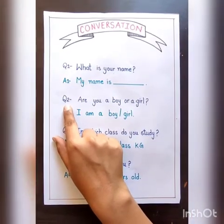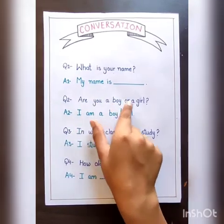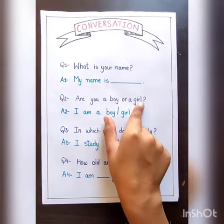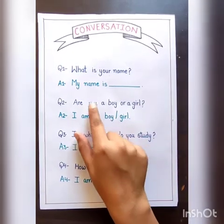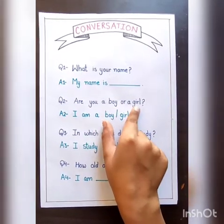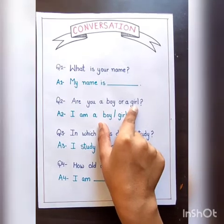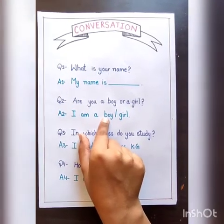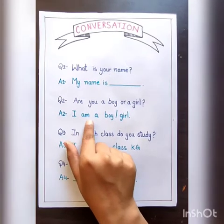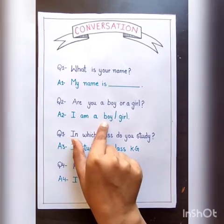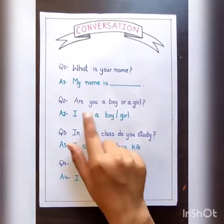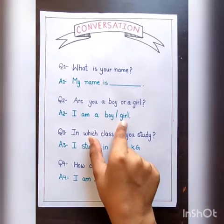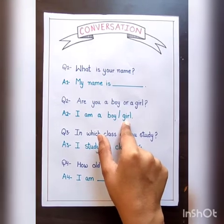Question number two is: Are you a boy or a girl? اس کا مطلب ہے آپ لڑکے ہو یا لڑکی ہو۔ تو جو boys ہوں گے وہ بولیں گے I am a boy. اور جو girls ہوں گی وہ بولیں گی I am a girl — اس کا مطلب ہے میں ایک لڑکی ہوں۔